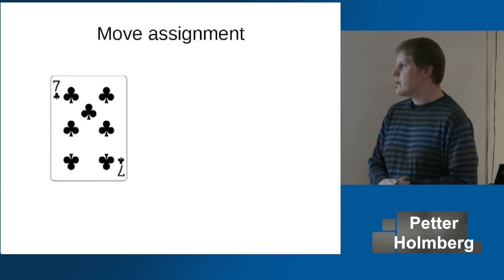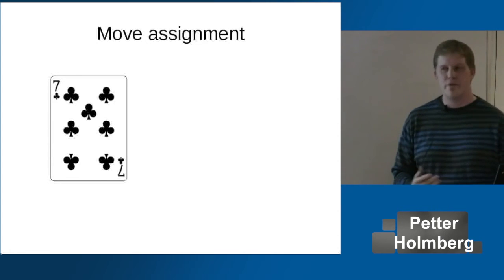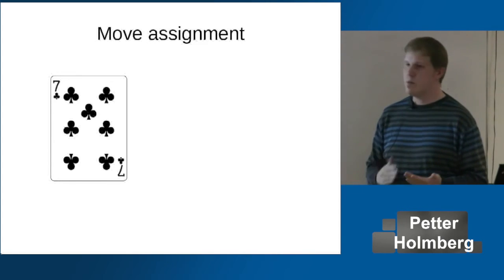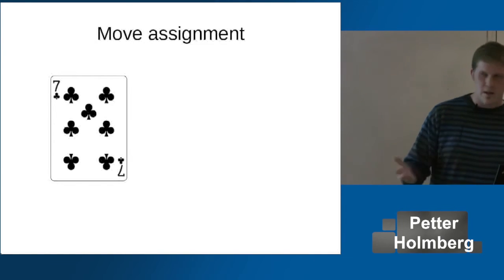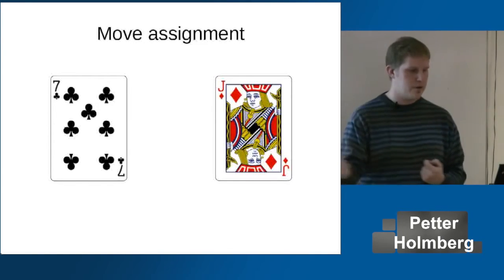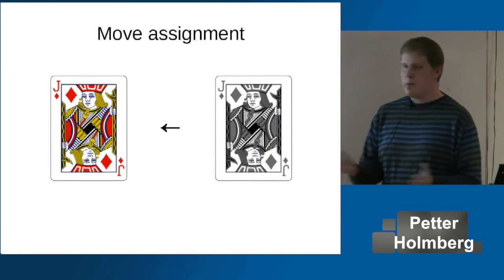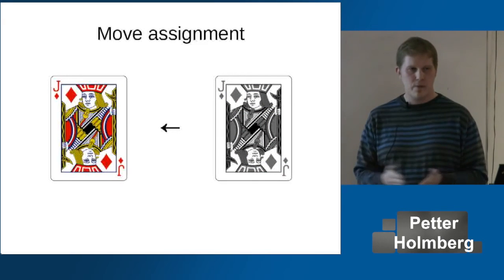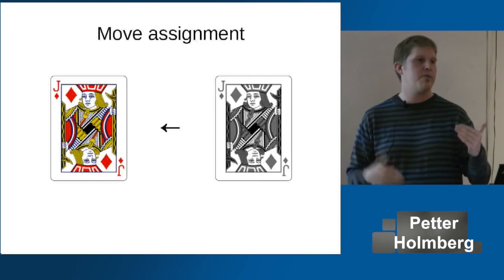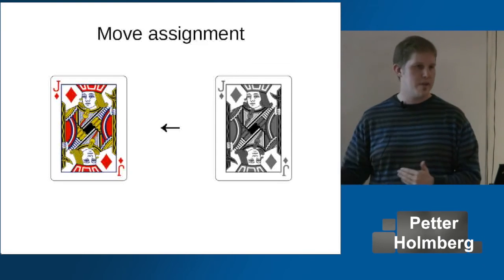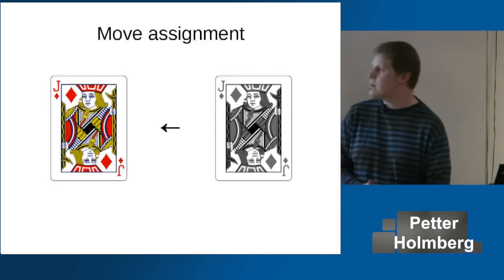C++11 made it a little more complex because we got move semantics added to the language — so we got two more special member functions. First we have move assignment — it's kind of like copy assignment. You have an object, you take another object, and instead of copying it over, you move it over. Now remember that if you have a type with a copy assignment operator but not a move assignment operator, that's fine — you can still call move on that because the compiler will just fall back on the copy assignment operator.